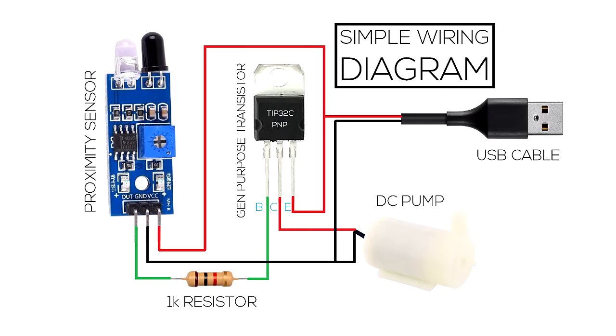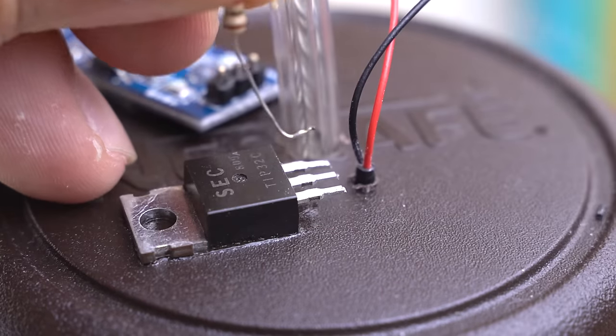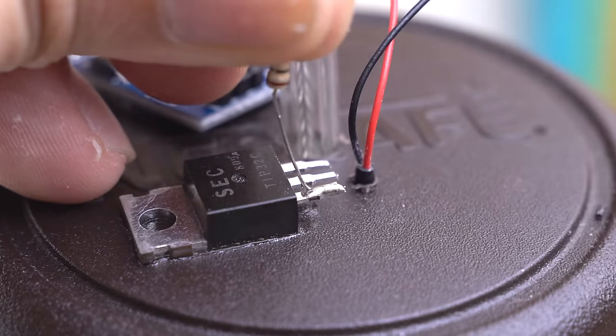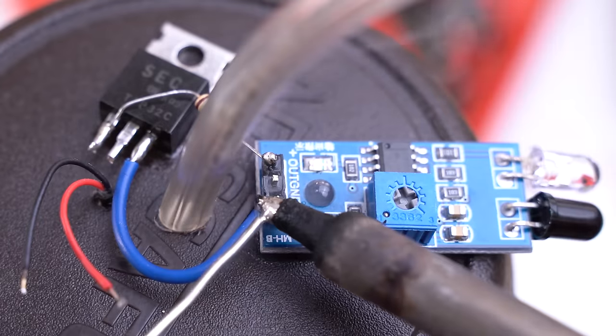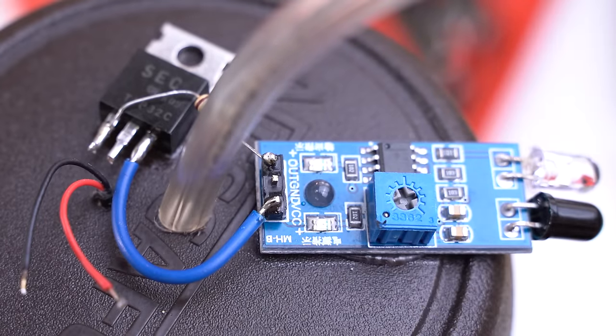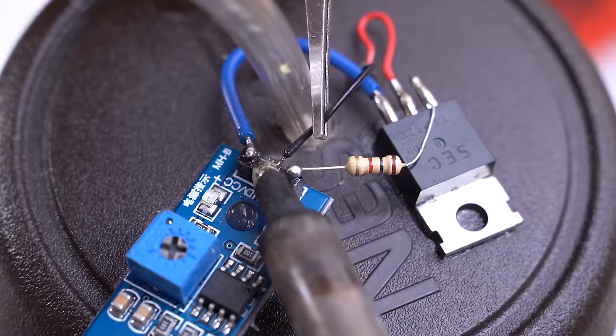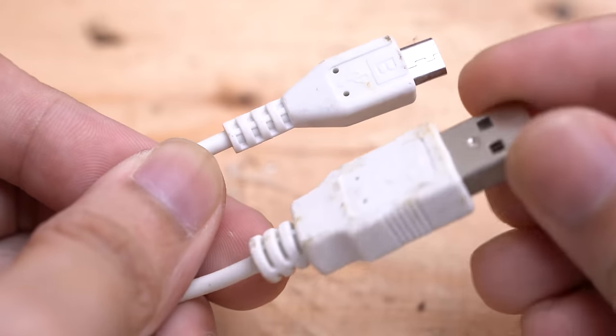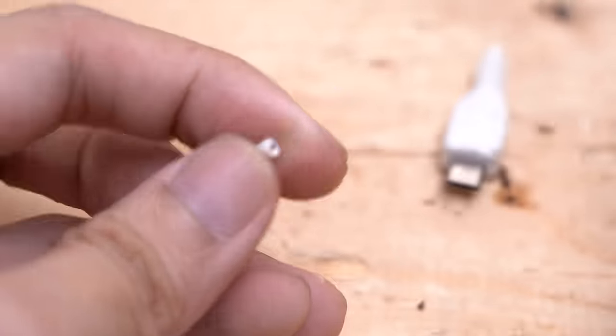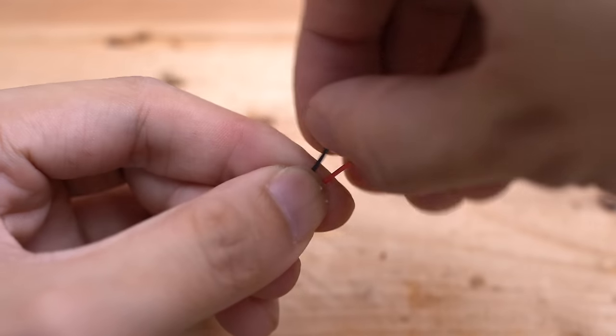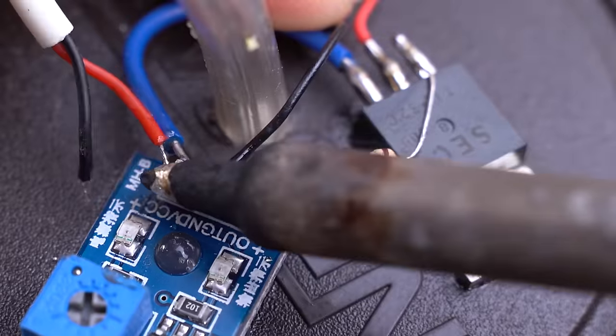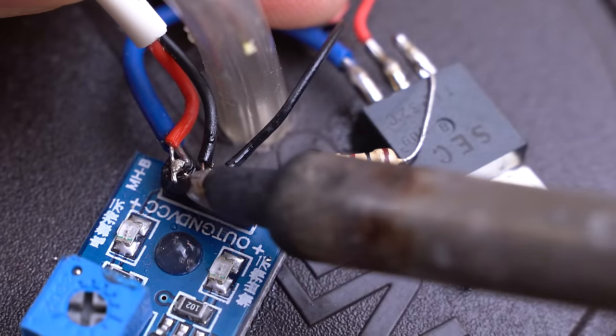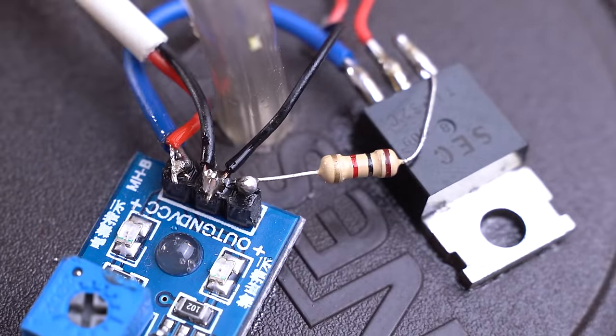Here's a simplified wiring diagram. Start by soldering the 1kΩ resistor from the transistor's base to the proximity sensor's digital output. Then connect the transistor's emitter to the VCC pin of the sensor, and solder the negative wire of your pump to the ground pin. For power, repurpose an old USB cable by cutting and stripping the red and black wires. The red wire goes to the VCC pin, and the black wire goes to the ground pin.